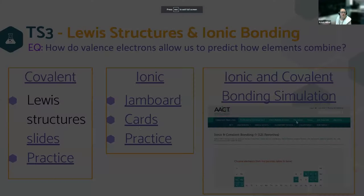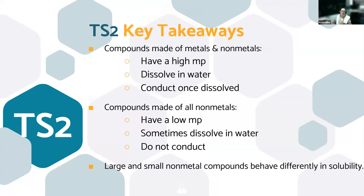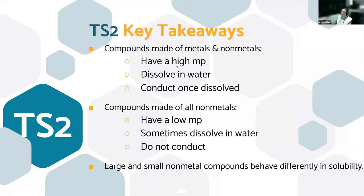Before students can label ionic and covalent in the dichotomous key, we need a lesson on what ionic and covalent mean. Then they come back to the patterns. There are four categories because some covalents dissolve in water (like sugar) and some don't (like paraffin wax) — same type of atoms (all non-metals) but different solubility. The reason: size of the molecule. Smaller molecules are more likely to dissolve; larger ones aren't. Kids make very concrete connections between how a substance behaves and the type of atoms in it.